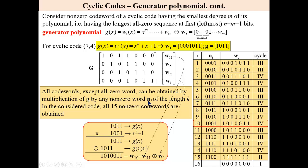In the conceded code, we will obtain 15 words. For example, we will multiply g(x) by this word of the length of 4. Then, we will obtain this codeword, which is w sub 10.